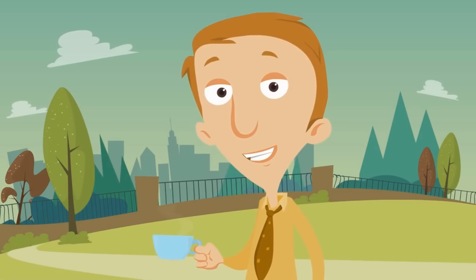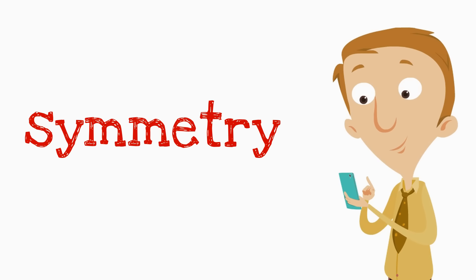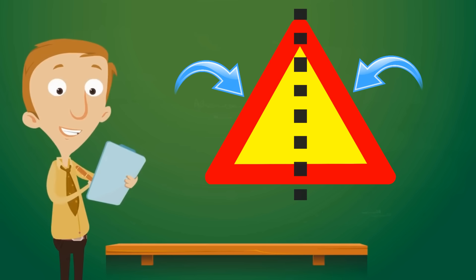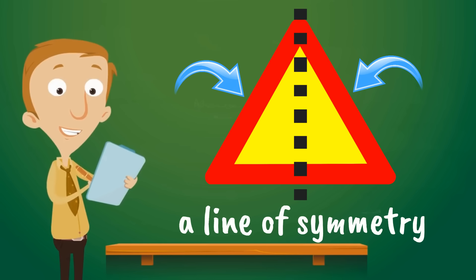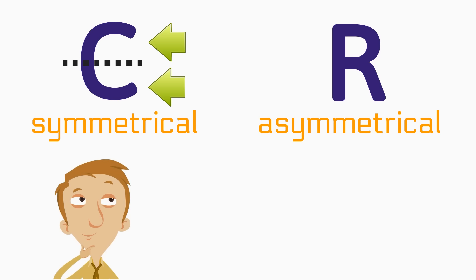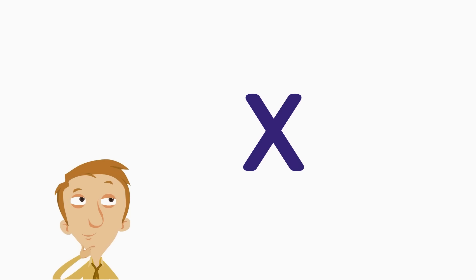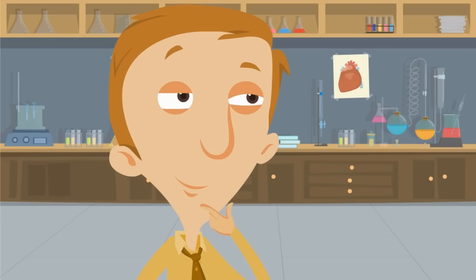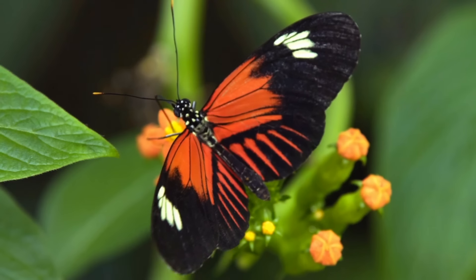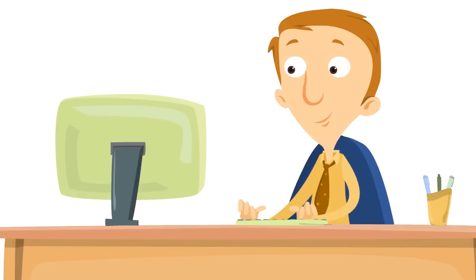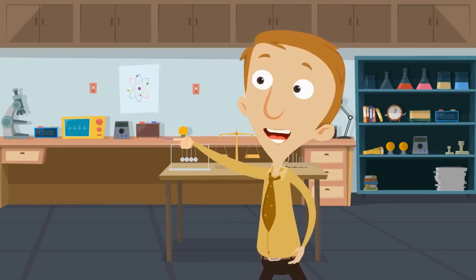Let's tie all of this together. When you are looking for symmetry, look for sides that match. The line down the middle that shows symmetry is called a line of symmetry. If it has symmetry, it is symmetrical. If it doesn't, it is asymmetrical. And if it is symmetrical, it might have more than one line of symmetry. You did such a phenomenal job!